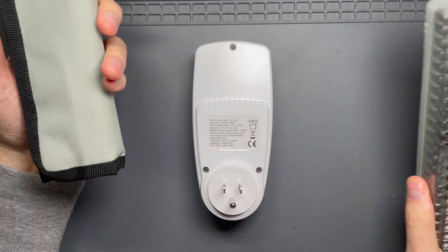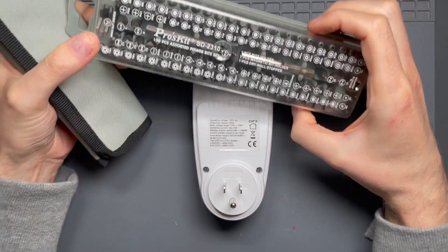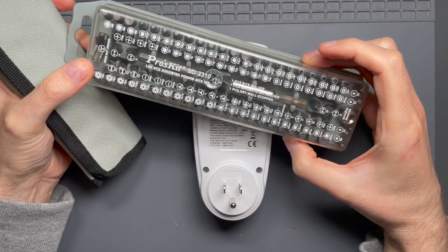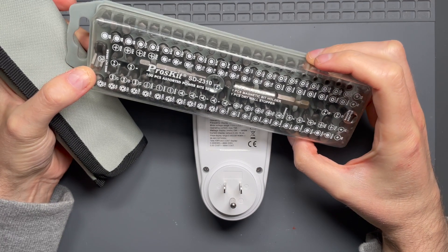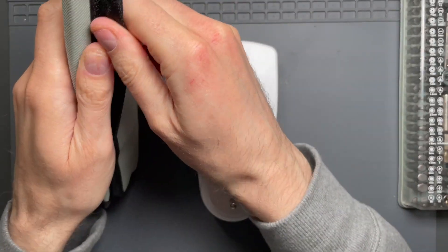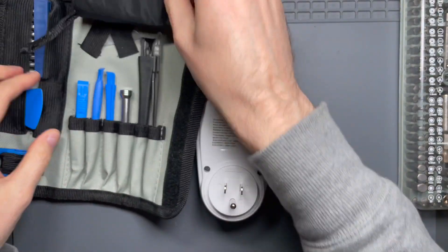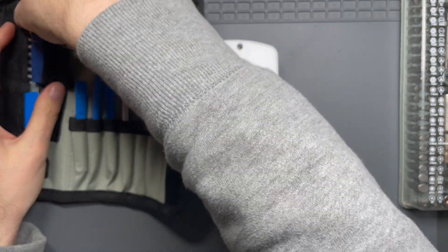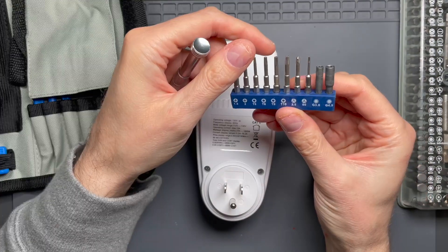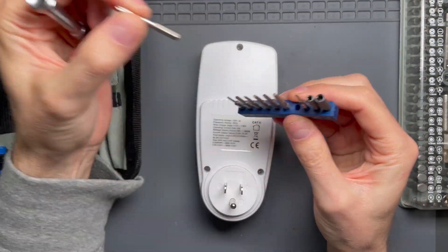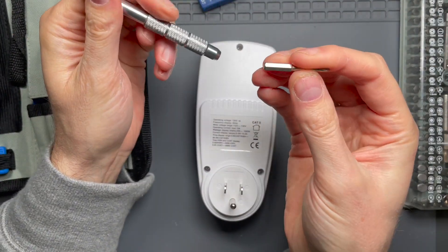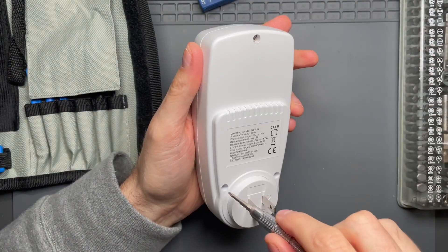I thought my pro kit actually had all the bits that I needed for opening this up, but apparently it did not. So here I've got a little kit that has the bits I need with a little driver. So I'll need the two and a half millimeter bit. So it's just three of these tri-wing screws.